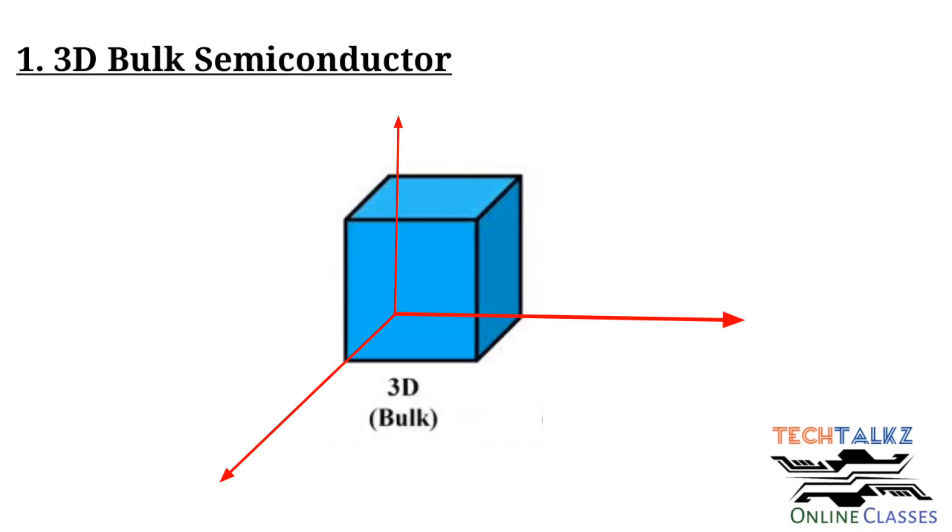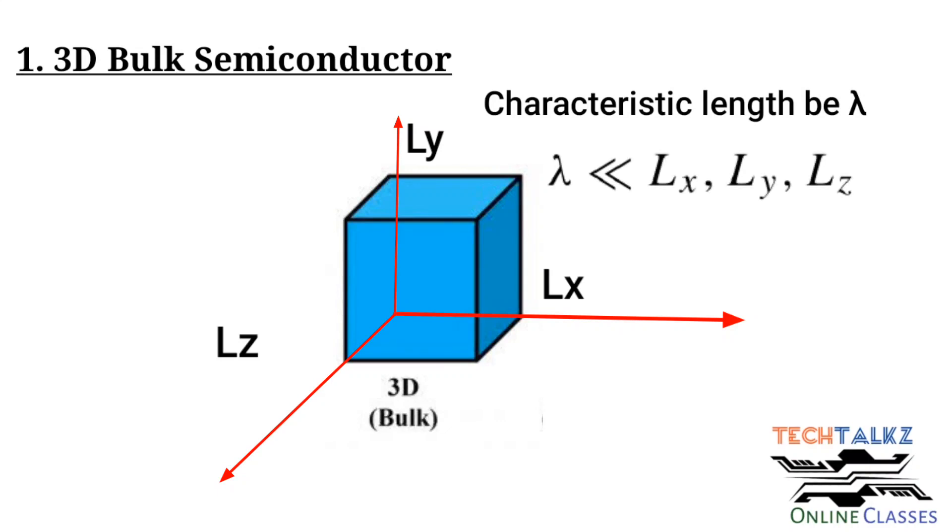Now consider a semiconductor sheet with dimensions Lx, Ly and Lz across the axis x, y and z respectively. And take the basic characteristic length of the material as lambda. If the dimensions Lx, Ly and Lz are much greater than characteristic length.